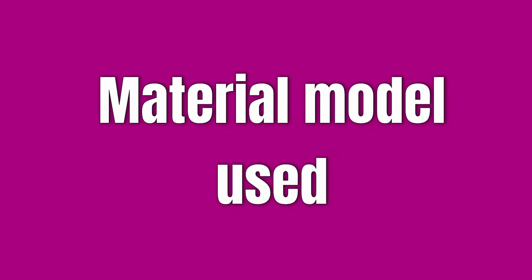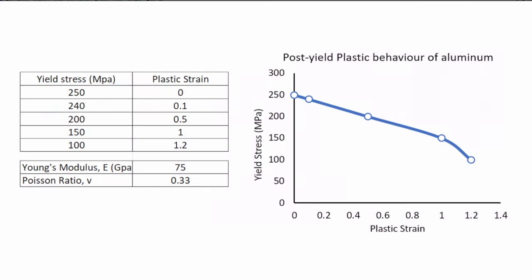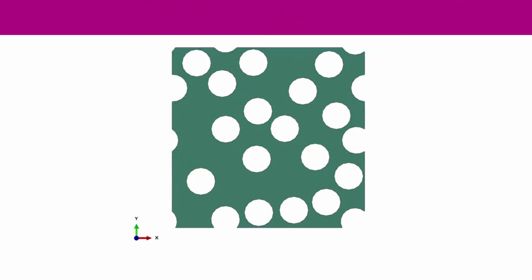The material system we're going to study is aluminium. I'm focusing on the post-yield behavior, so we get some post-yield softening. The Young's modulus is 75 gigapascals and Poisson's ratio is 0.33. These are the post-yield properties we'll bring into the model.